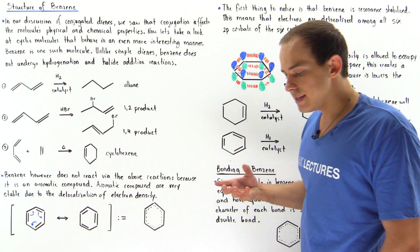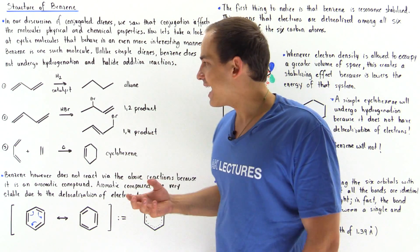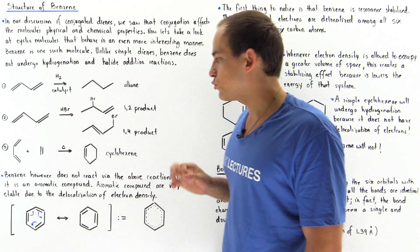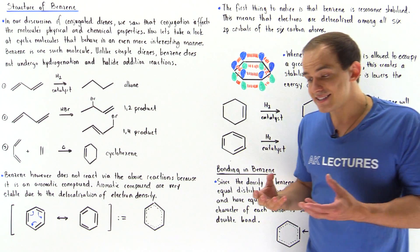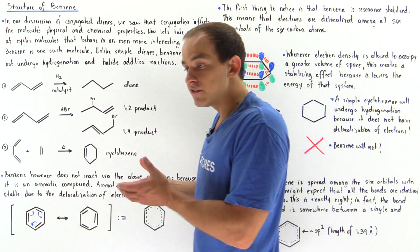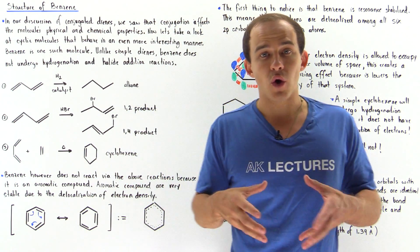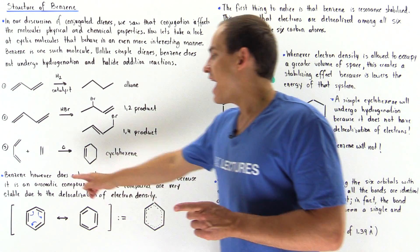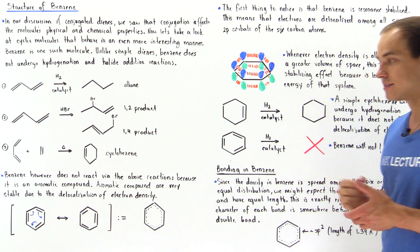Now benzene, which is also a conjugated system, does not react in either one of these reactions because it's so stable. So benzene is unreactive because it is very stable. It falls into a category of molecules we call aromatic compounds, aromatic molecules.